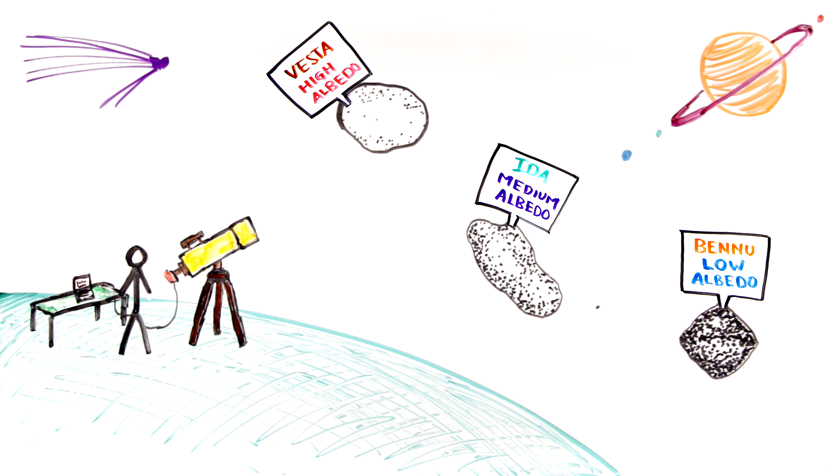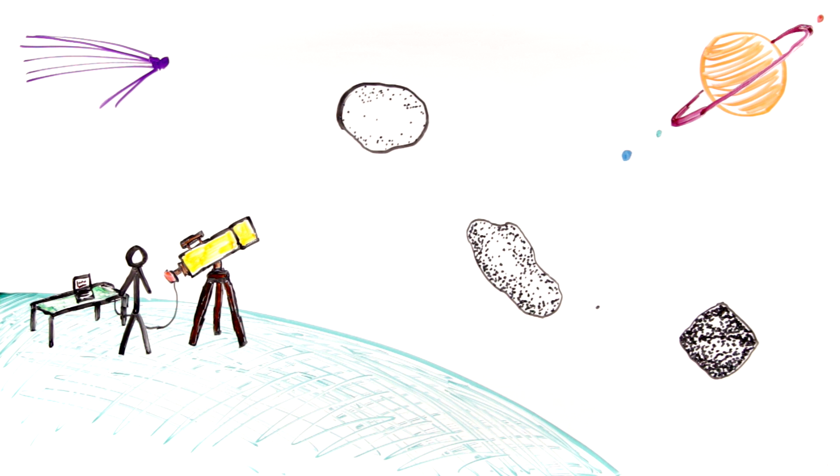Bennu's albedo is 0.04 to 0.05, which tells scientists that it is dark and probably carbon-rich.